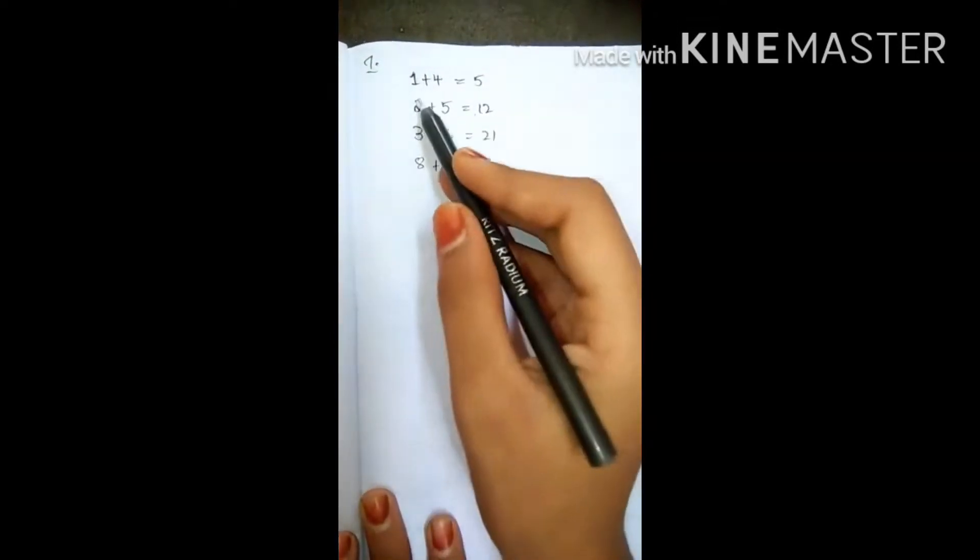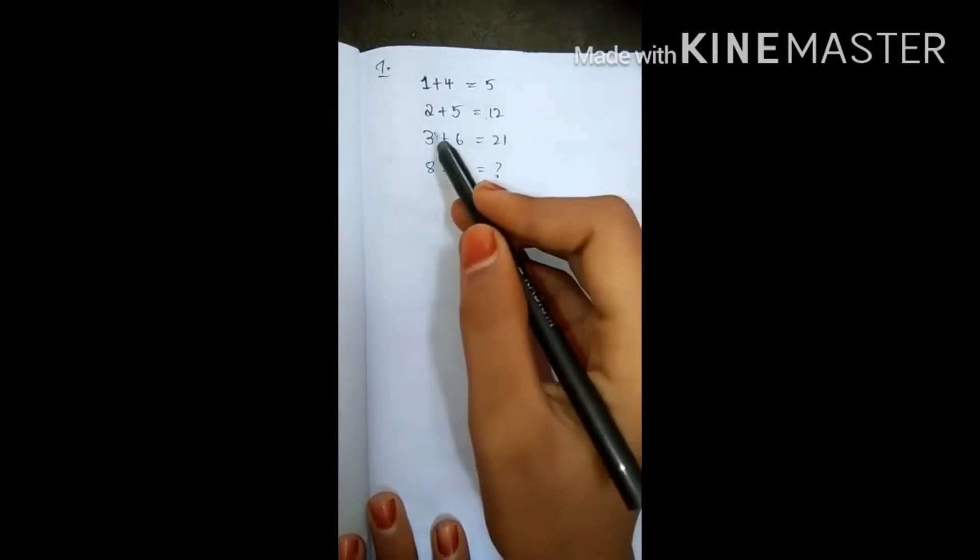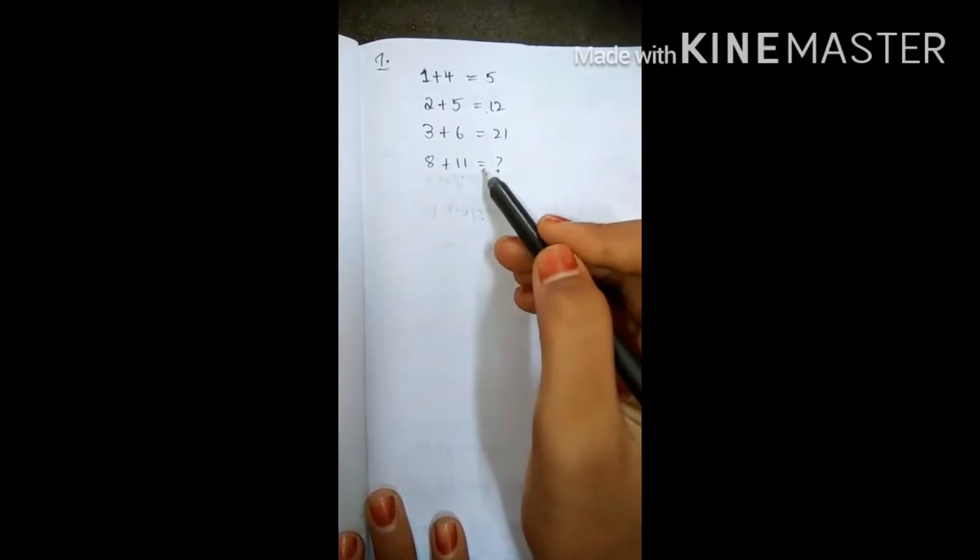Okay, our first question is 1 plus 4 equals 5, 2 plus 5 equals 12, 3 plus 6 equals 21, 8 plus 11 equals question mark. Let's solve.